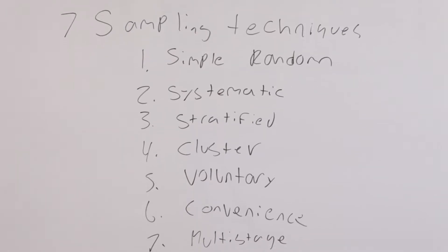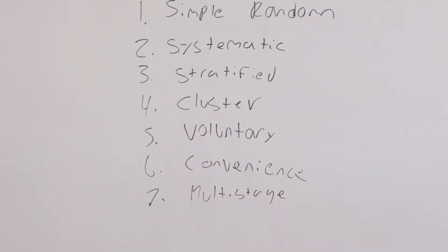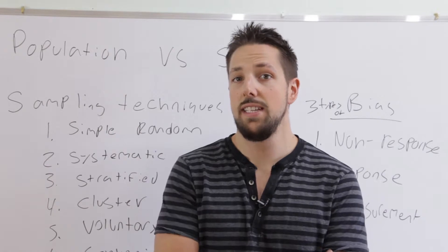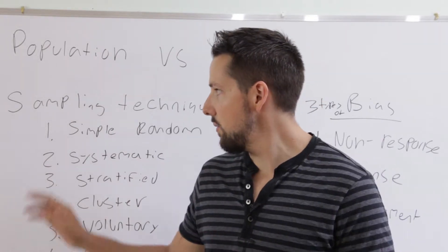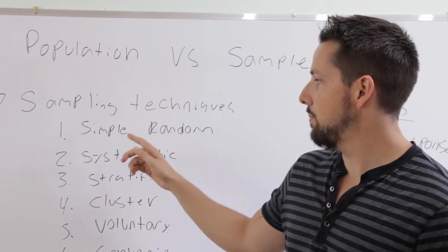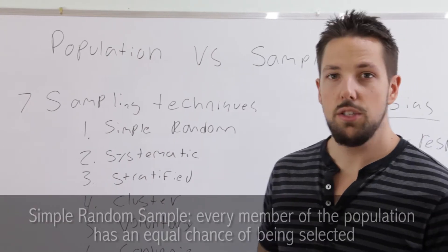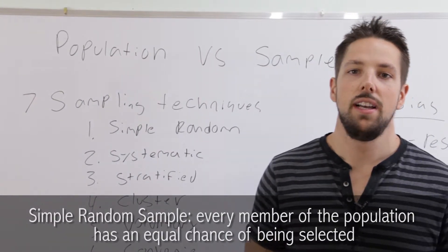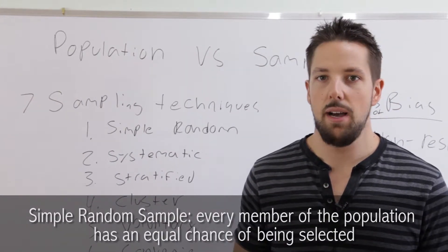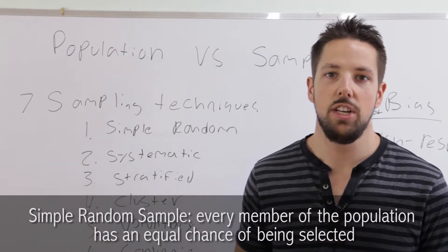There are seven different types of sampling techniques that we can go through. I'm going to outline them, give a definition and give an example. We'll start with the first type, which is a simple random sample. To form a simple random sample, it means that every member of the population has to have an equal chance of being selected.